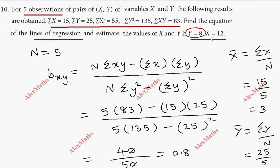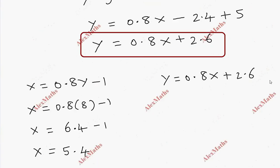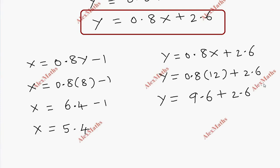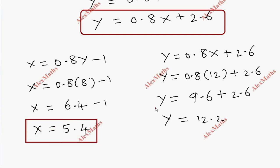So if we get x equal to 12, we get y. So y equals 0.8 into 12 plus 2.6. So this is 9.6 plus 2.6. So total is 12.2. So this is the value.